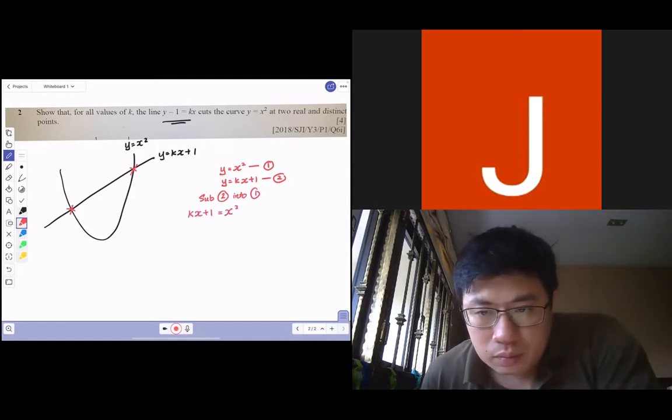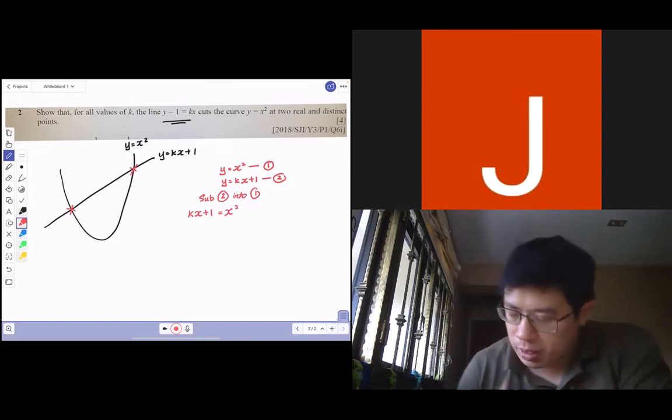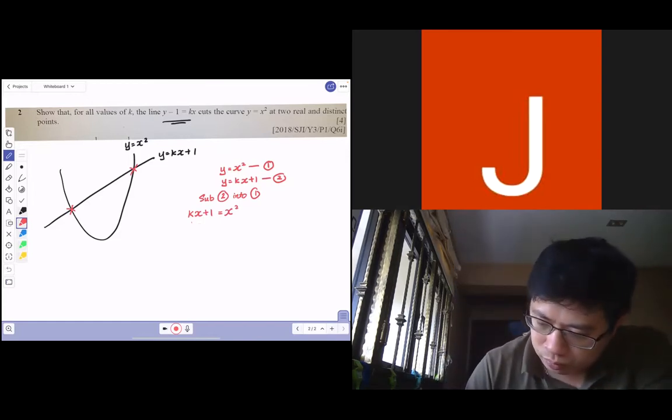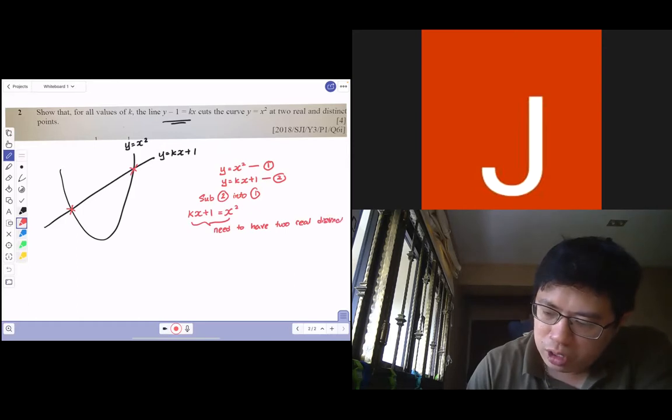Because you know that you want to have two solutions, we want to show this equation needs to have two real and distinct solutions. This is formed by you equating them together.